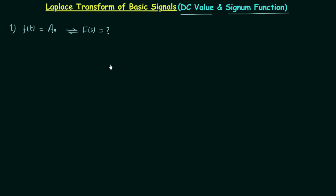There are two ways to find the Laplace transform of DC value. The first method is simply using the formula of Laplace transform, and the second method is using the Laplace transform of the unit step signal. I will give you both methods. In method number one we will simply use the formula of Laplace transform.